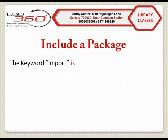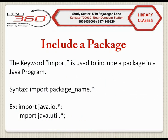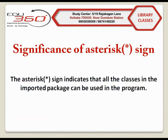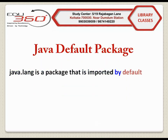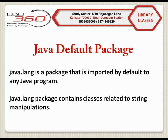Now, how to include a package. The keyword import is used to include a package in a Java program. Syntax: import packageName.*; e.g. import java.io.*. The asterisk sign indicates that all the classes of the imported package can be used in the program. In case you want to use any specific class of a package, use the class name in place of the asterisk, e.g. import java.util.Scanner. Note that java.lang is a package that is imported by default to any Java program — it is also called the Java default package.